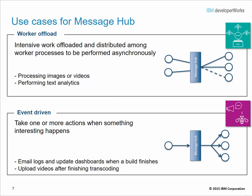Now let's look at some use cases for MessageHub. The first use case is the worker offload pattern. This is appropriate when you have intensive work as part of a user interaction that can be offloaded and distributed among worker processes to be performed asynchronously. Examples include processing images or videos or performing text analytics. The next use case is event-driven: applications need to take one or more actions when something interesting happens, such as sending email logs and updating dashboards when a build is finished, or uploading videos after finishing transcoding.